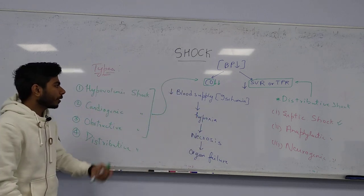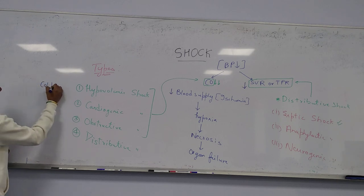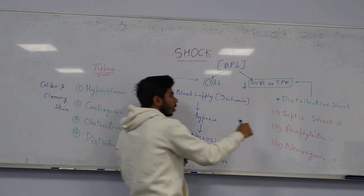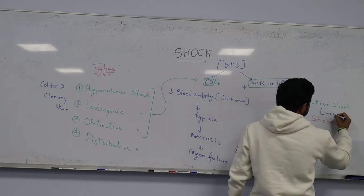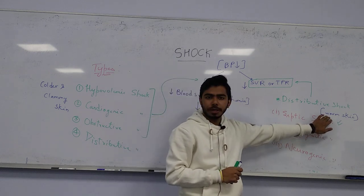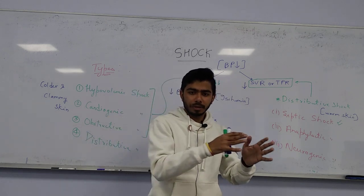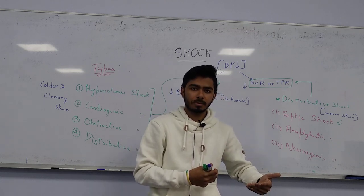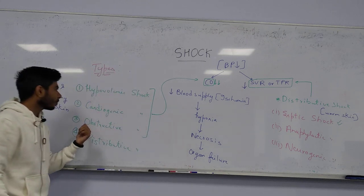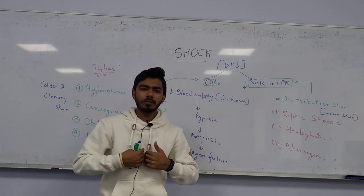In hypovolemic, cardiogenic, and obstructive shock, patients will have colder and clammy skin, because the problem is with cardiac output. In distributive shock, patients will have warm skin due to vasodilation, where blood stays in the vessels longer, generating heat.